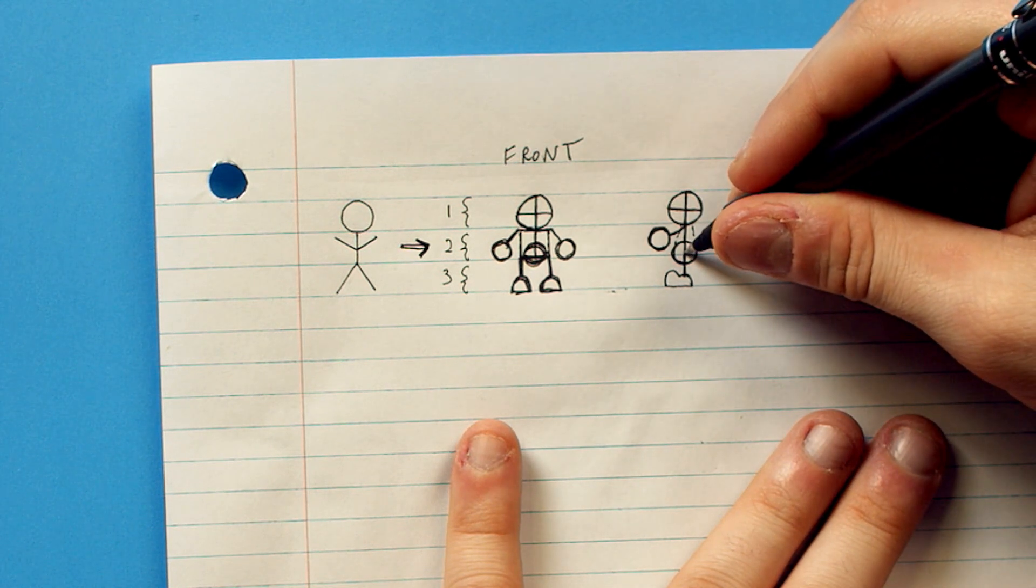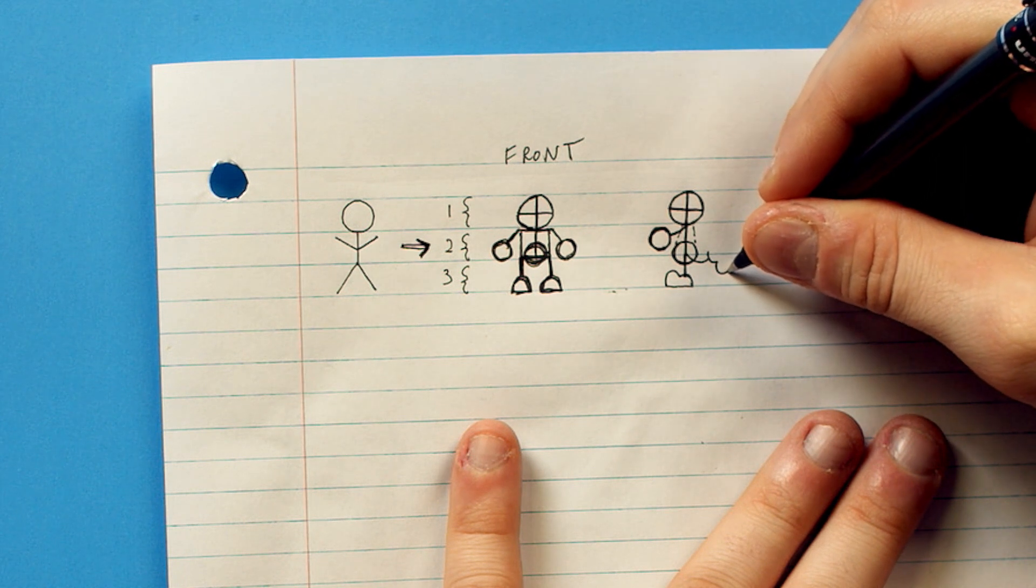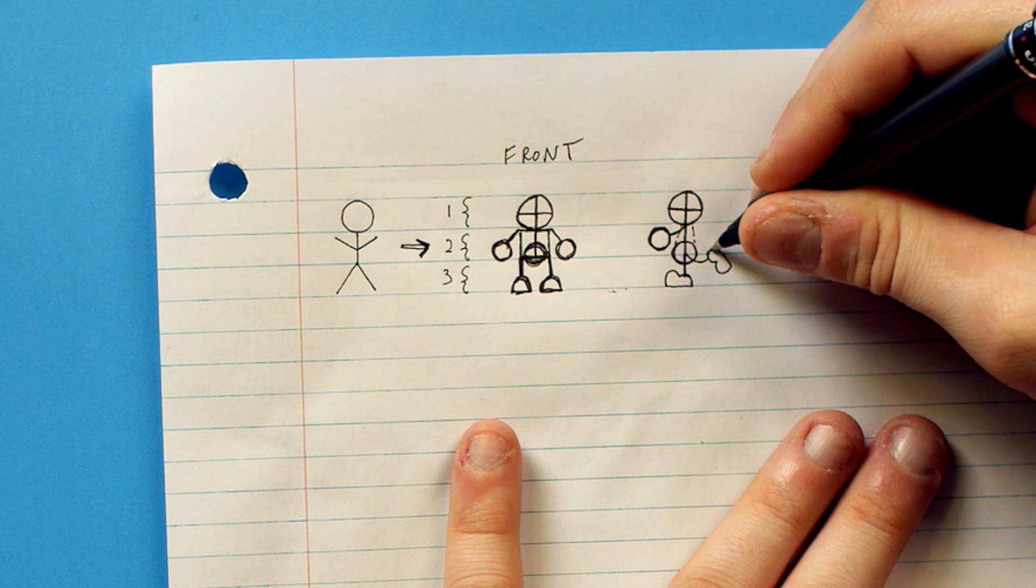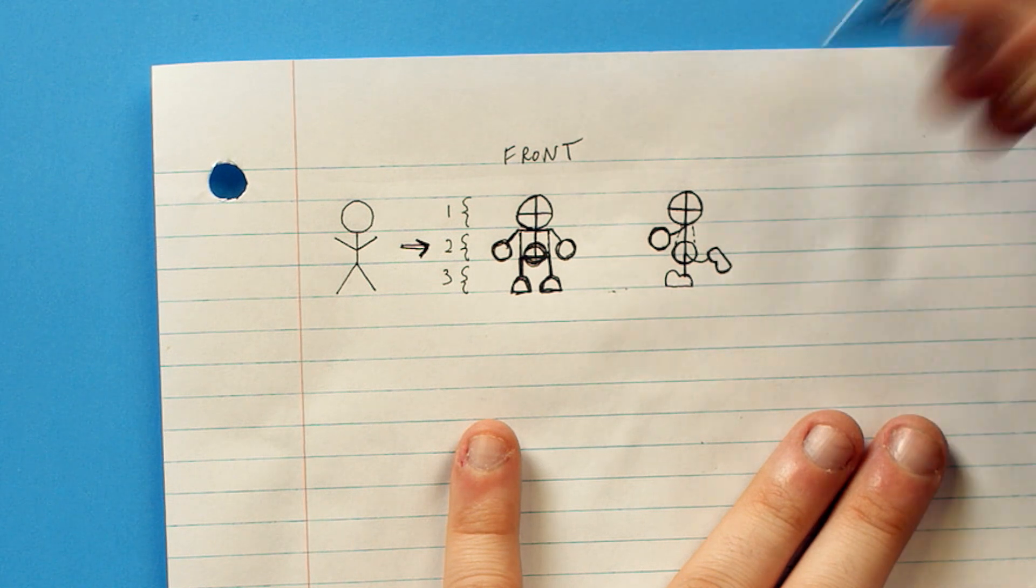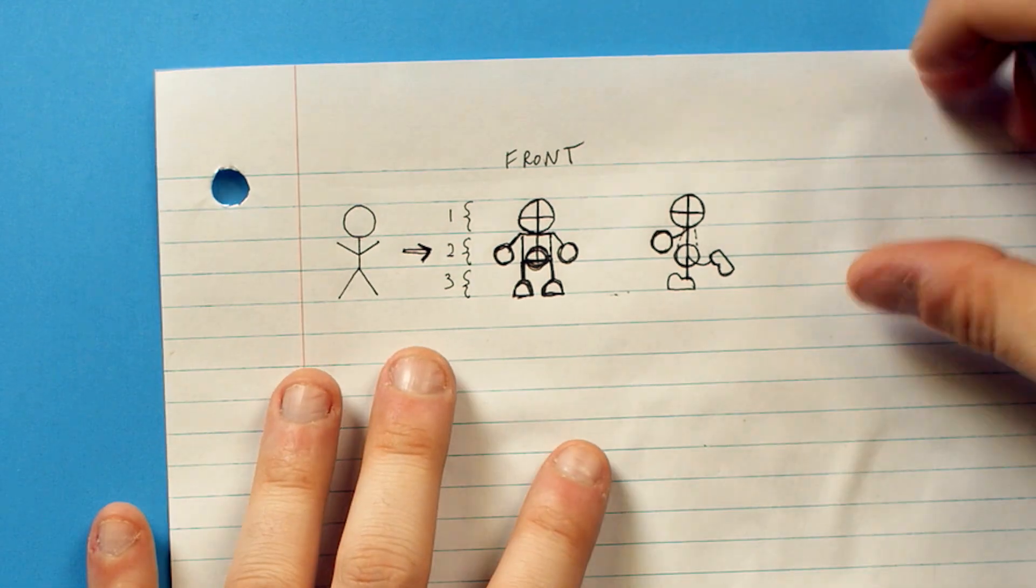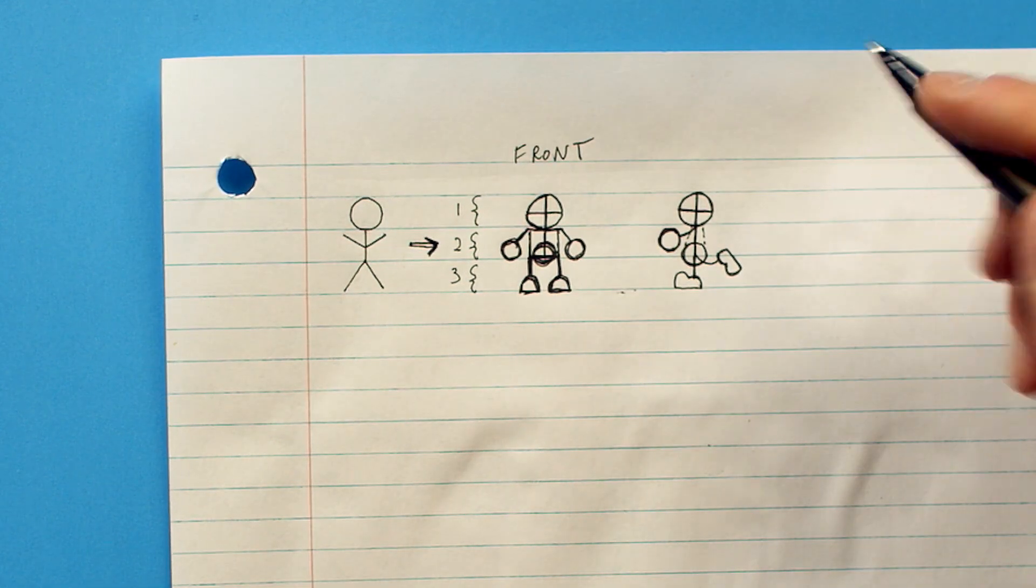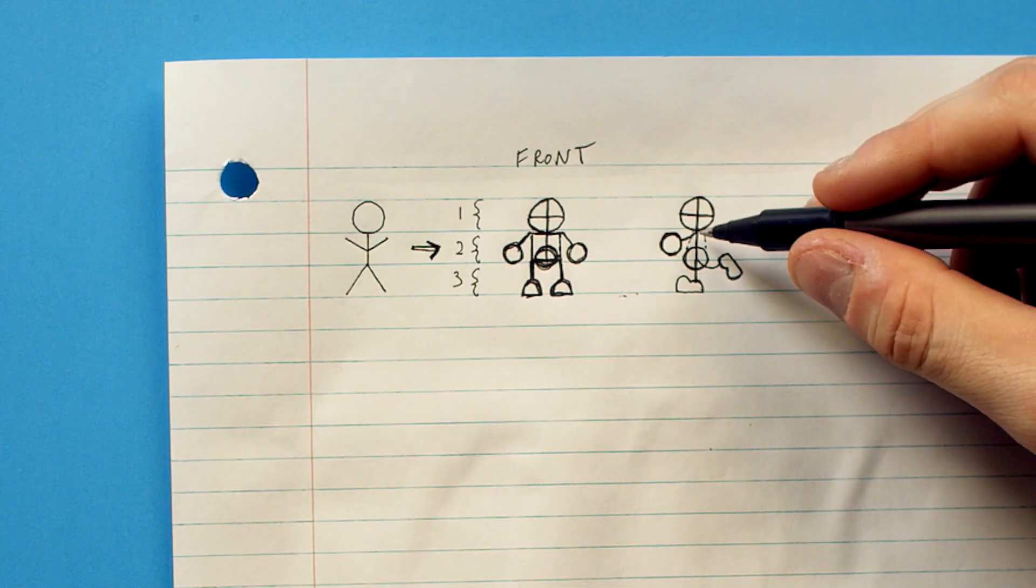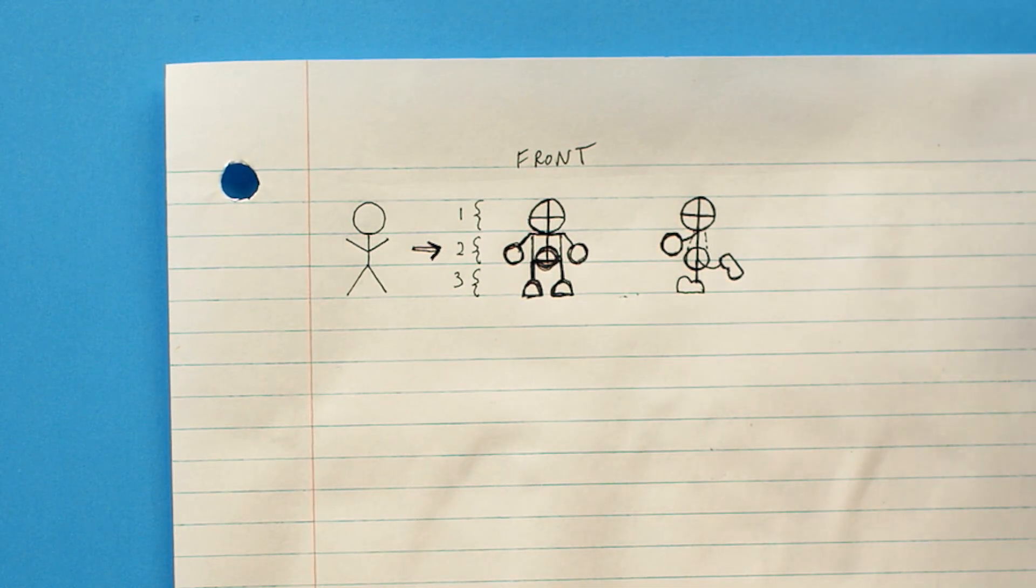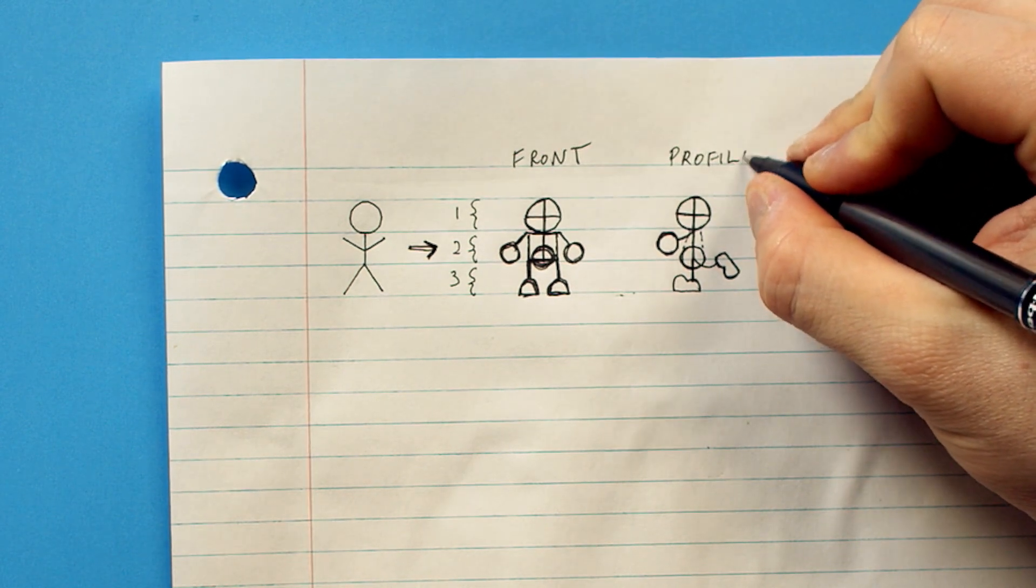You can even draw a leg coming out of the back here. Just throw a shoe on it. And you can see how that profile's really working out. And you can see how it's different. You can see the two arms like that. You have the shoulders. In this one, you have no shoulders.